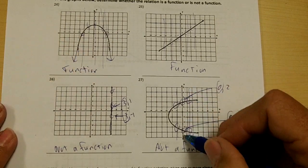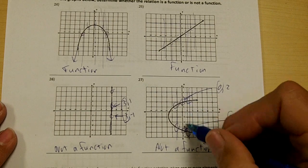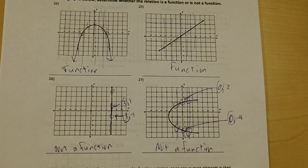So if a vertical line crosses the graph twice, the x repeats, and it's not a function.